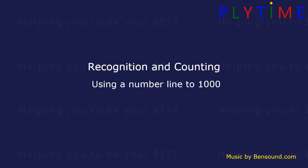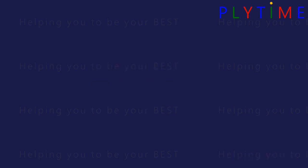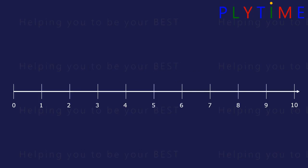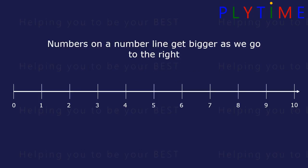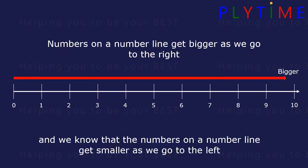Recognition and counting using a number line to 1000. Numbers on a number line get bigger as we go to the right, from 0 to 10 they get bigger. And the numbers on a number line get smaller as we go to the left, from 10 to 0 is smaller.